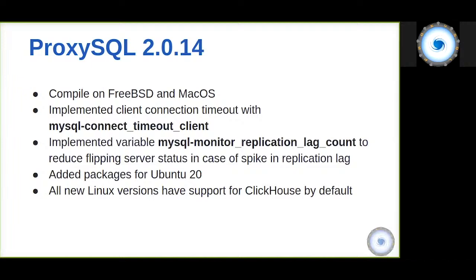We added support for compiling ProxySQL on FreeBSD and macOS, and implemented a few new variables. One controls the MySQL client connect timeout — if a client connects to ProxySQL but is idle for a certain period, ProxySQL will automatically disconnect it. We also added MySQL_ReplicationLagCount to solve the problem of replication lag spikes. Previously, if a momentary spike was detected, ProxySQL would disable the server even though replication returned to normal seconds later. The new variable allows ProxySQL to perform additional checks before disabling a lagging server.